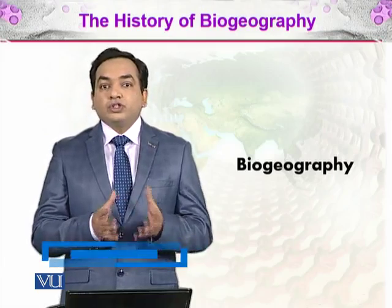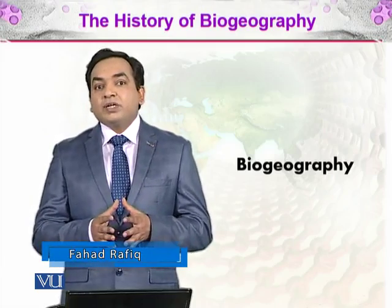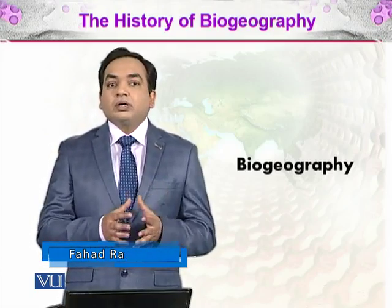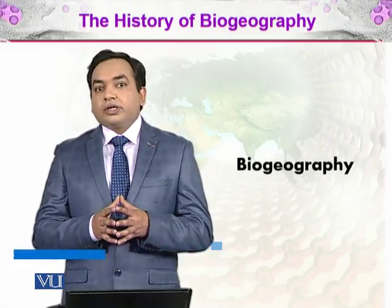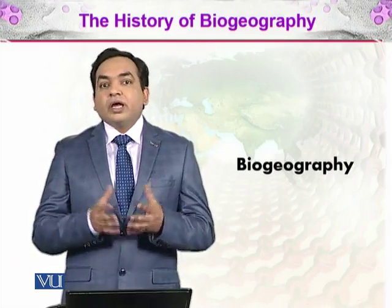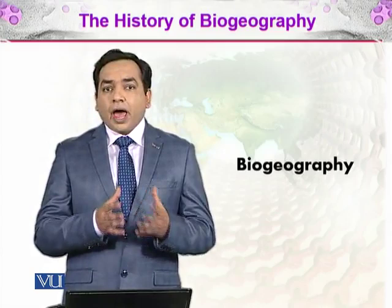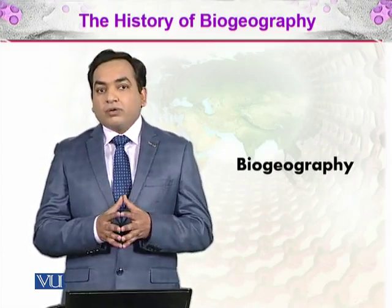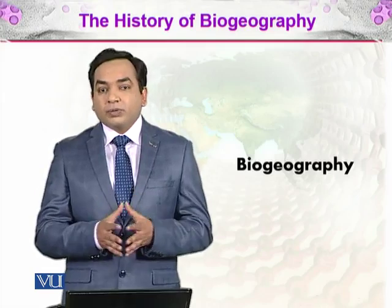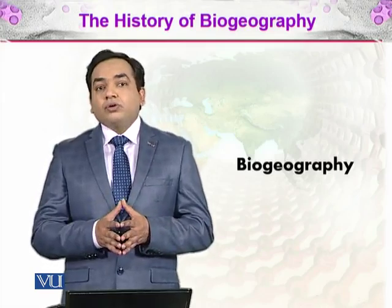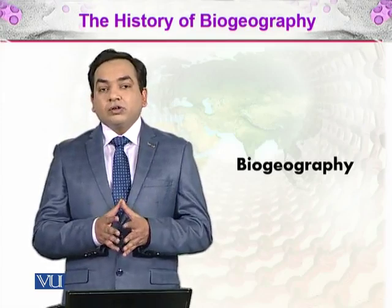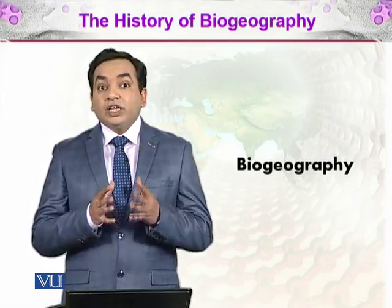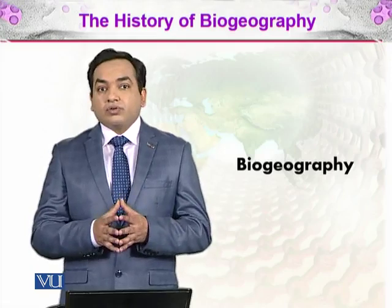The geography of Earth — 'geo' means the Earth, 'graphy' means to measure. So it is the field of science where we measure the Earth. It sees the surface of Earth and is related to maps and cartography and how different parts of the world are situated away from each other. And 'bio', whenever it combines with biology, means we see the distribution of living organisms on the surface of Earth.